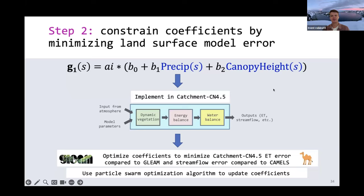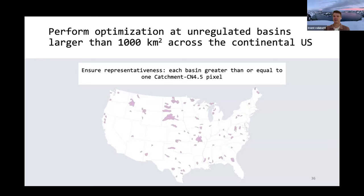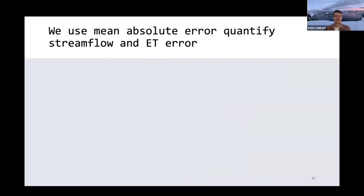I just wanted to note that we performed this optimization at unregulated basins larger than 1,000 square kilometers across the continental US. This 1,000 square kilometers number came from the fact that we want to ensure that each basin is greater than or equal to one Catchment-CN4.5 pixel to ensure we're representing that basin with our land surface model. When we apply these criteria, we're left with the following basins I'm showing here. We have a pretty good representation of the entire continental US with these basins.